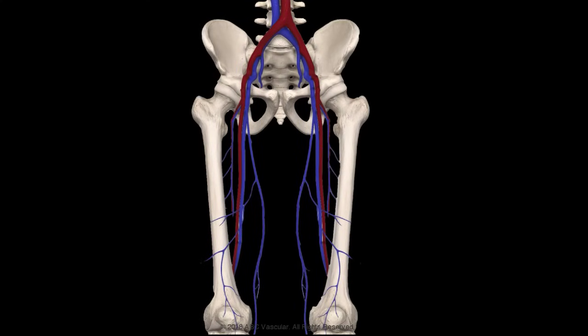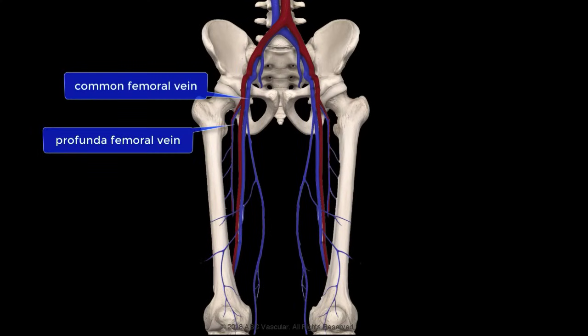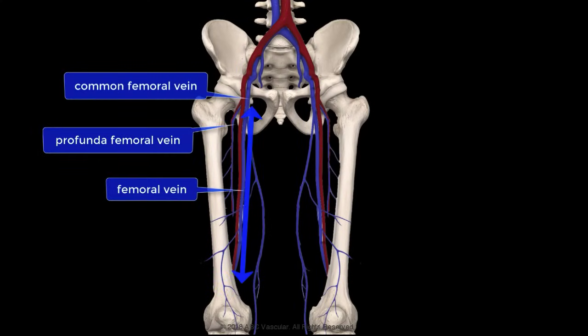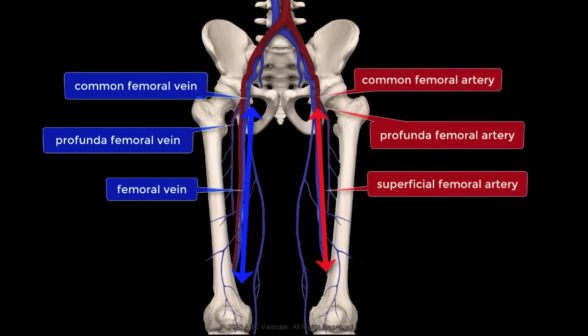The main deep veins of the thigh are the common femoral vein, the profunda femoral vein, and the femoral vein — previously called the superficial femoral vein. All these deep thigh veins are adjacent to a satellite artery; therefore we have the common, profunda, and superficial femoral arteries.